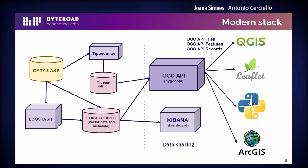PyGeoAPI then serves this data to different clients. Here we have examples like QGIS, Leaflet, ArcGIS, and some Python libraries that already support OGC API standards. Also Kibana, which is part of the ElasticSearch stack and has quite interesting support for geospatial functions.